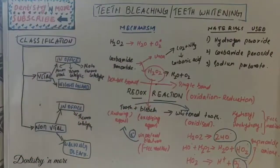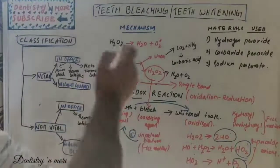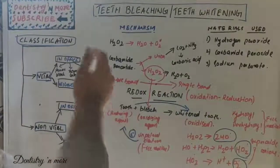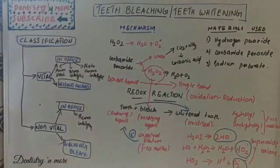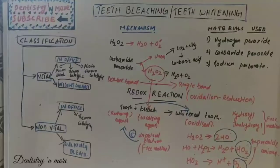The double bond is oxidized to become a single bond, so the color changes to a lighter shade. That is the mechanism of bleaching. Now we are going to see the indications, contraindications, various types of pigments, and all bleaching techniques.